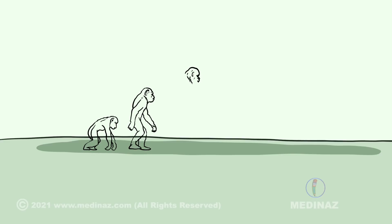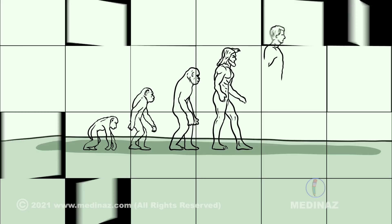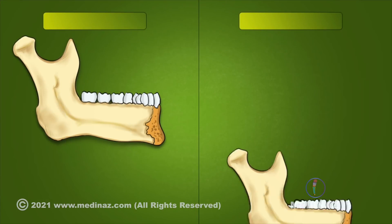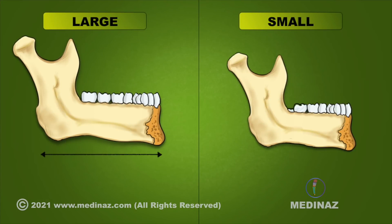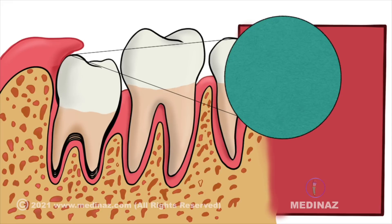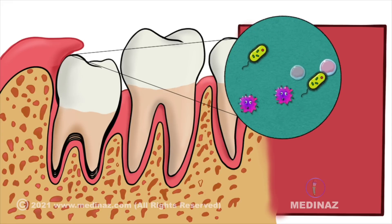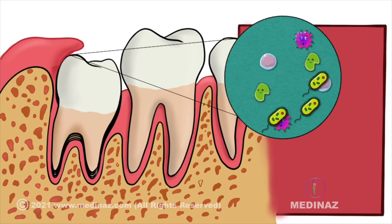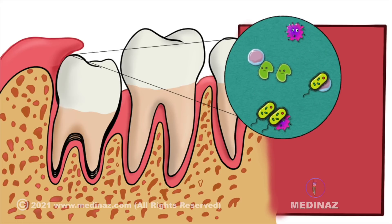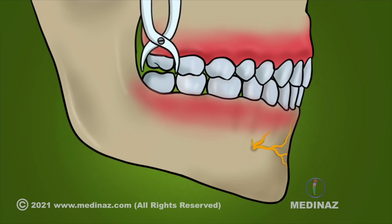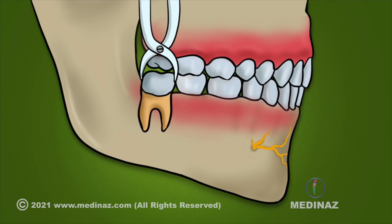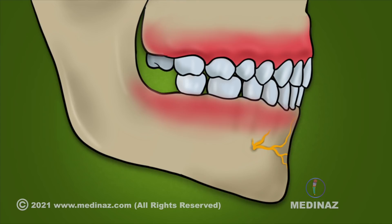Hi guys, welcome to our channel. Do you know that the human jaw size is decreasing as we are evolving over time? And as we all know that the wisdom teeth are last to erupt, there is very little space left in the jaw. Due to this, there are more problems associated with wisdom teeth. So in this video, we will see the most common causes in which wisdom teeth removal is suggested.